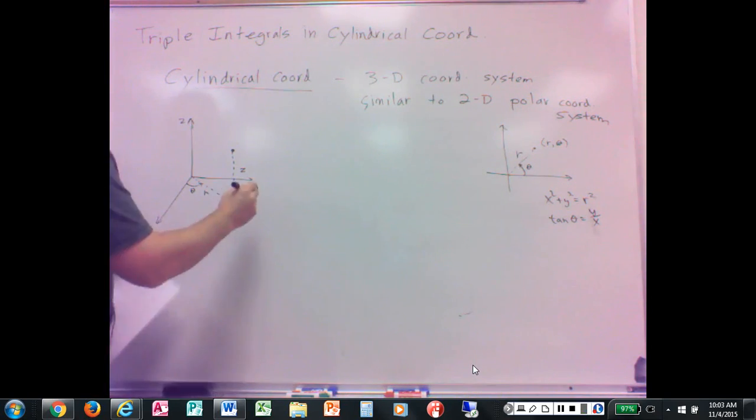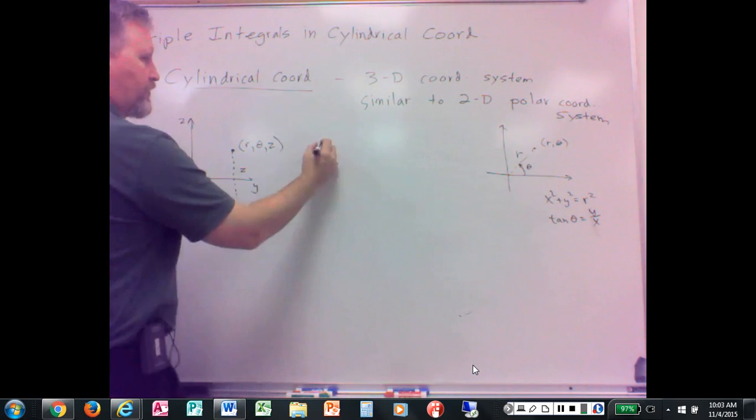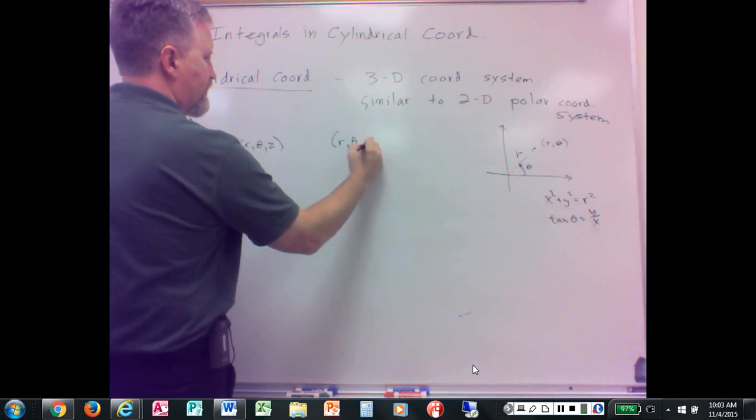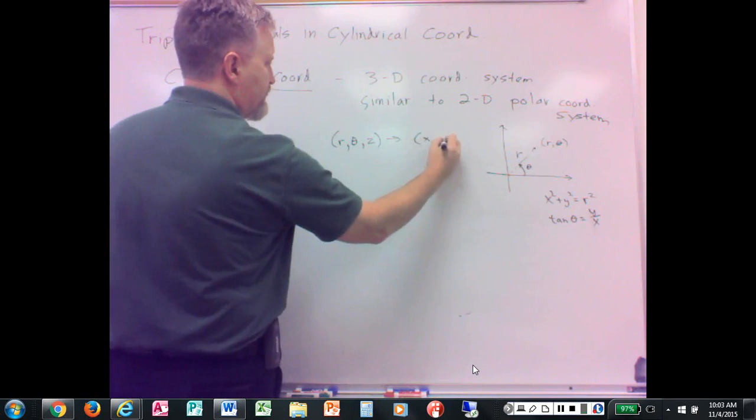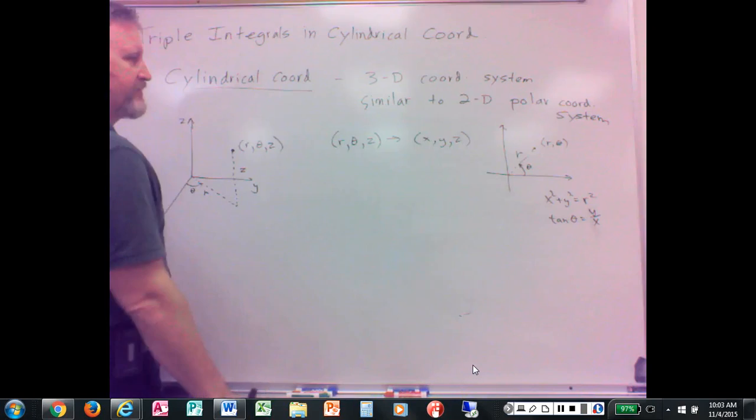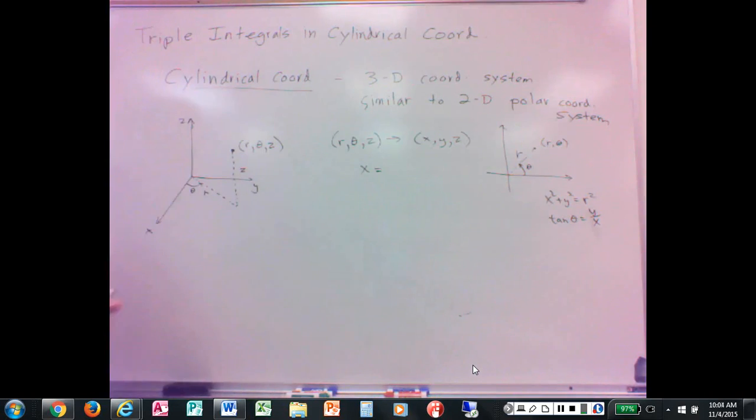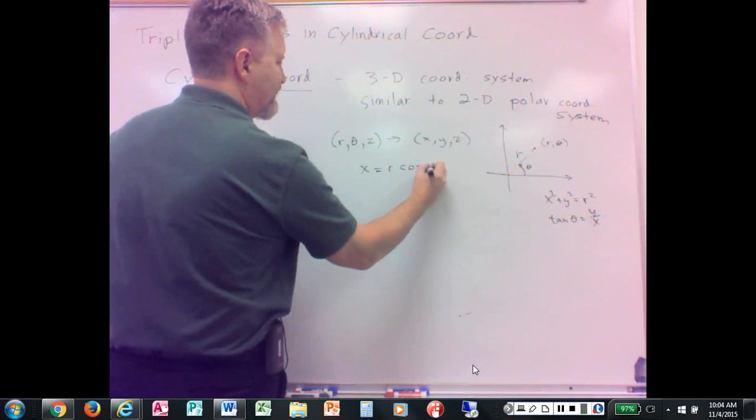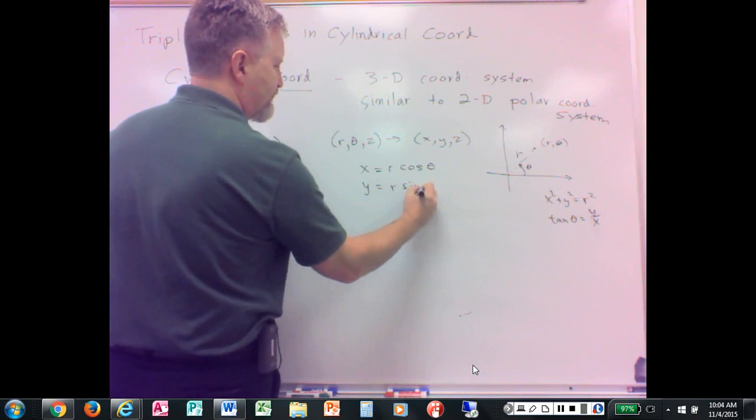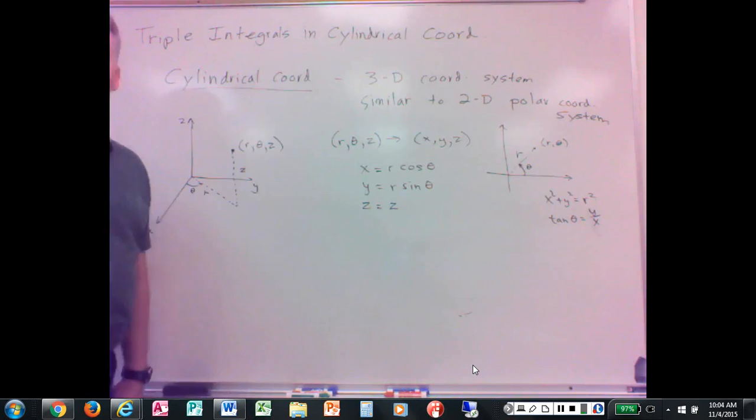And so this point then we call it r theta z. And so if we want to go from r theta z to the xyz, I've got r theta z, I want xyz. I just know x would be r cosine theta. Y equals r sine theta. And z? It's z. Okay. So that'll give us those.